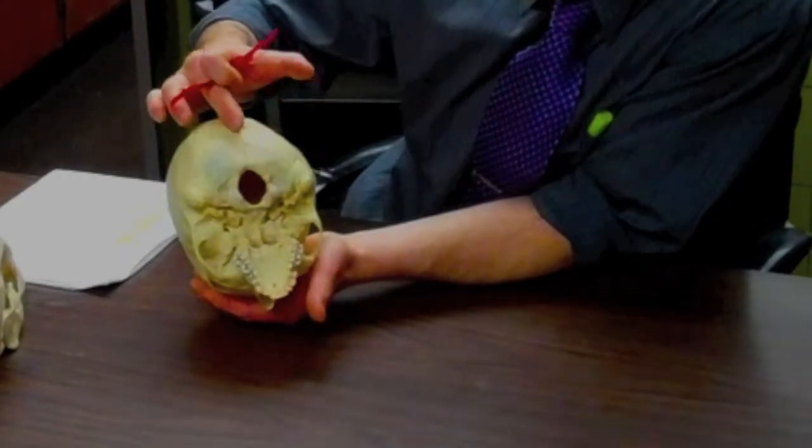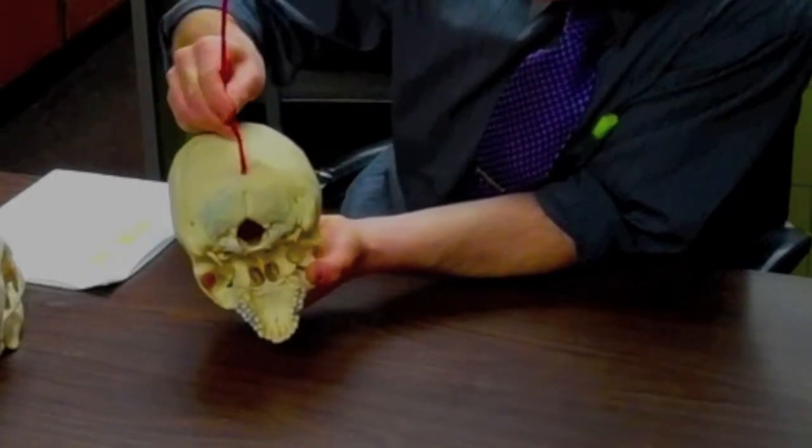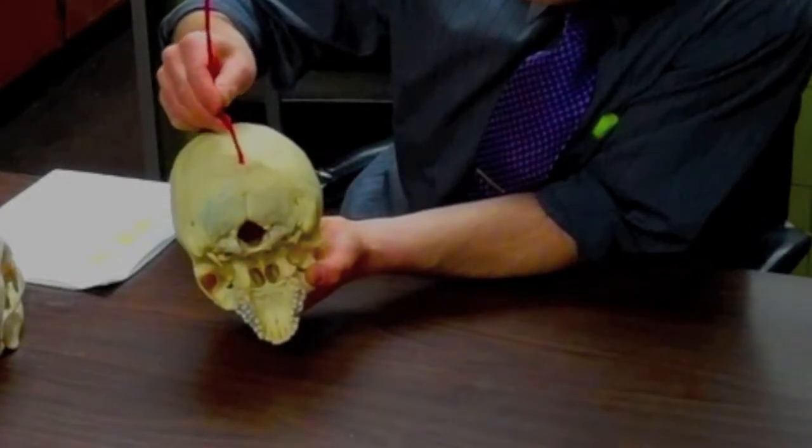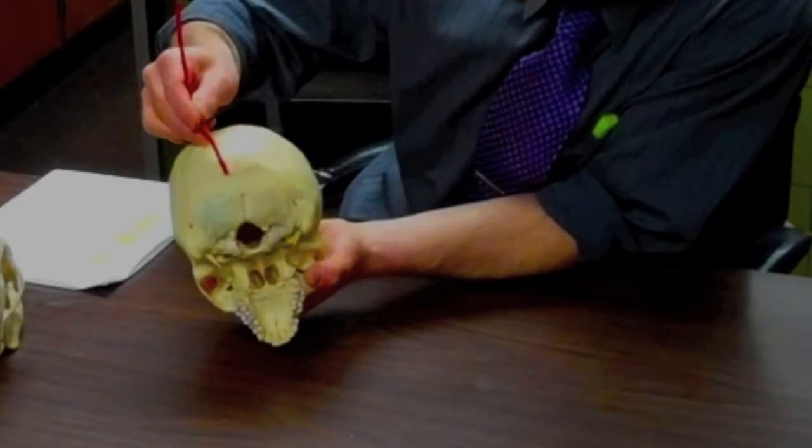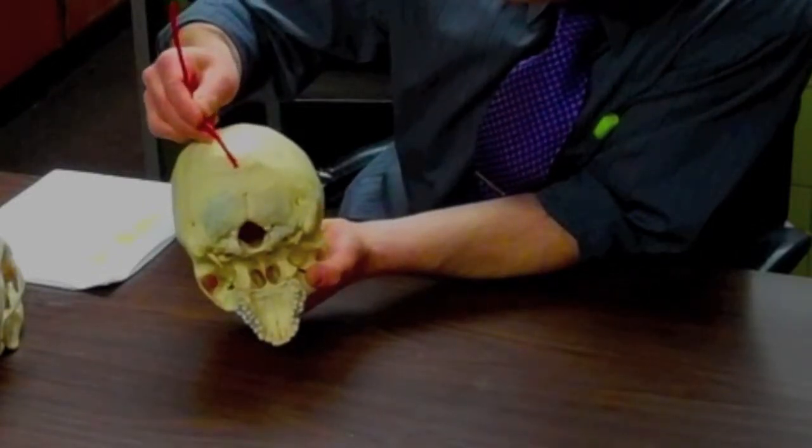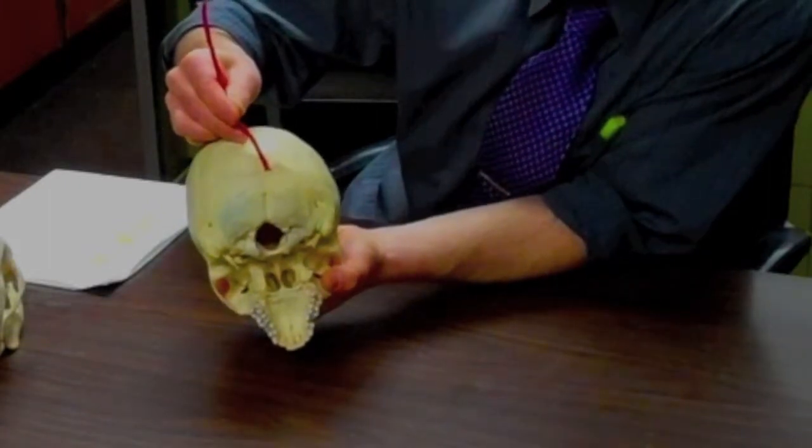And then as we move posterior, on the back of the head, we feel a fairly blunt piece, the bluntest process that we can feel. It's the insertion of the trapezius muscle and that's called the external occipital protuberance, or EOP.